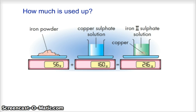Here's one illustrated example of how the mass of reactants must always equal the mass of the products. On our scale on the left, we measure the mass of our iron powder—it's 56 grams. We measure the mass of our copper sulfate solution—it's 160 grams. So the total mass of our reactants is 216 grams.